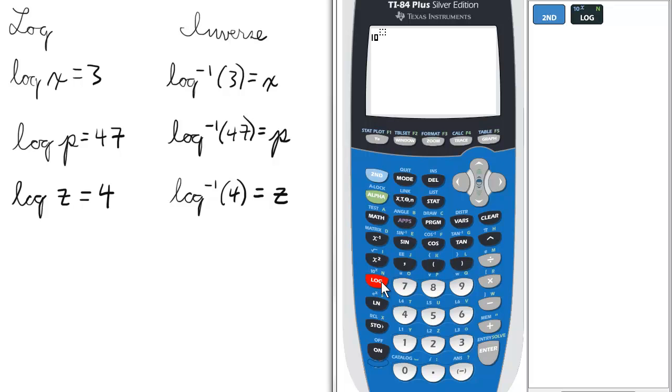Notice it's 10 raised to the power. Then we enter 3. So the inverse log of 3 equals x. That means x equals 1,000.